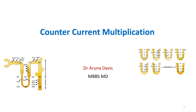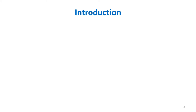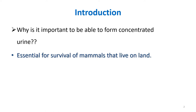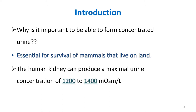In this video, we will be discussing how to approach the question on countercurrent multiplication. When you get a question like this — what is countercurrent multiplication or how is urine concentrated — your introduction should contain the question why. Why is it important that urine should be concentrated? Basically, it is because of this property of the kidneys that plasma osmolality is maintained. It is essential for the survival of mammals that live on land that urine is concentrated. You can also write about the normal value: human kidneys can produce a maximal urine concentration of 1200 to 1400 milliosmol per litre.